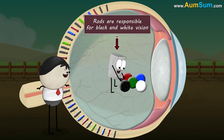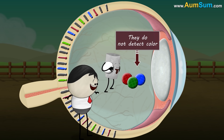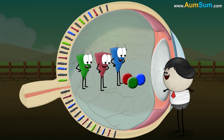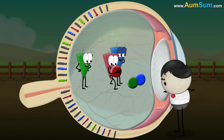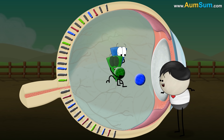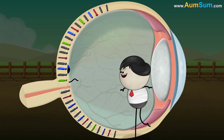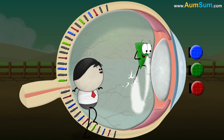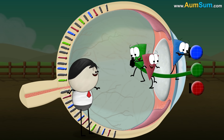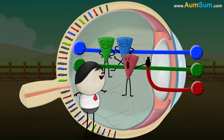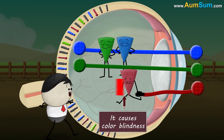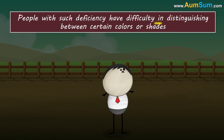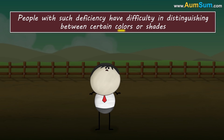Rods are responsible for black and white vision — they do not detect color. Whereas cones detect color. There are three types of cones: one cone perceives red light, another perceives green, and the third perceives blue. Together, these cones help us see the whole spectrum of colors. In some cases, when one or more types of cones do not work properly, it causes color blindness. People with such deficiency have difficulty distinguishing between certain colors or shades.